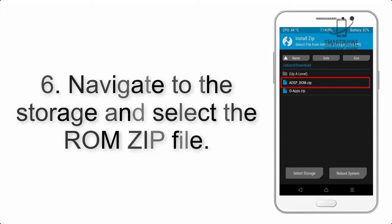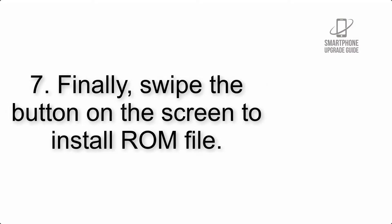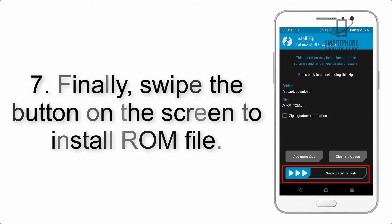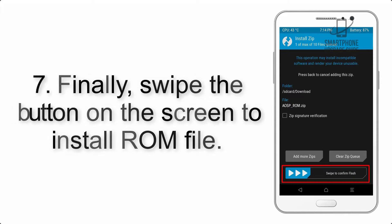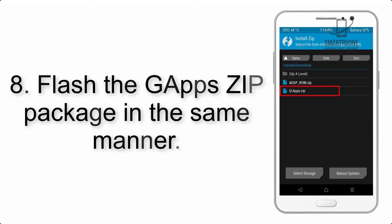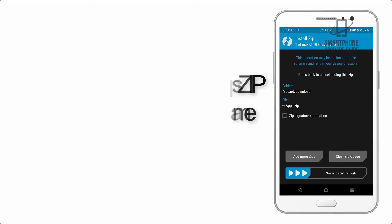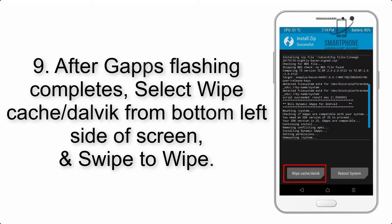Step 6: Navigate to the storage and select the ROM zip file. Step 7: Finally, swipe the button on the screen to install the ROM file. Step 8: Flash the gapps zip package in the same manner.